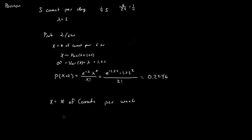Well, that's simply the Poisson distribution, which was originally 5 comets per day, but now we're doing it per week, and there are 7 days in a week. So we multiply 5 by 7 and get 35 comets per week.